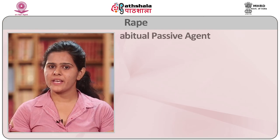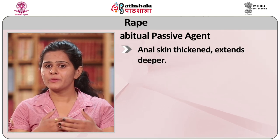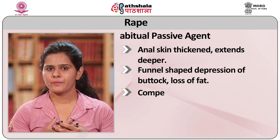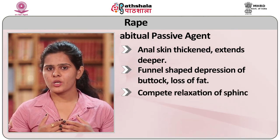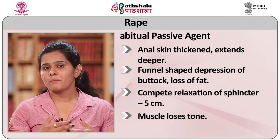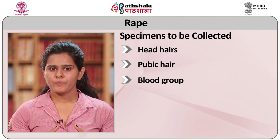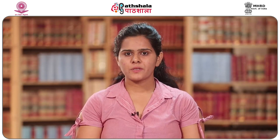In habitual passive agents, anal skin becomes thickened, extends deeper with funnel-shaped depression of buttocks, loss of fat, complete relaxation of sphincters around 5 cm, and muscles lose their tone. Anal fissure, piles, and STDs are noted. Specimens to be collected at the scene of crime include head hairs, pubic hairs, blood group, urine drug screening, nail scraping for blood or tissue, swabs from soiled areas of skin, anal and rectal swabs, and swabs from the penis of the accused.